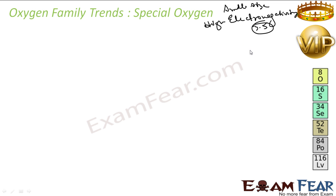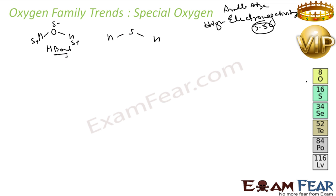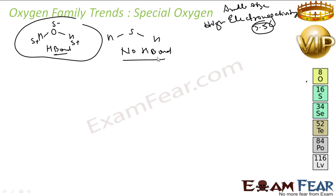The electronegativity value of oxygen is almost 3.5, which is why oxygen is special and has unique properties. For example, oxygen forms water while sulfur forms hydrogen sulfide. Oxygen's high electronegativity creates partial negative and positive charges, enabling hydrogen bond formation. Sulfur, however, does not form hydrogen bonds. Oxygen compounds are also more ionic due to oxygen's high electronegativity.